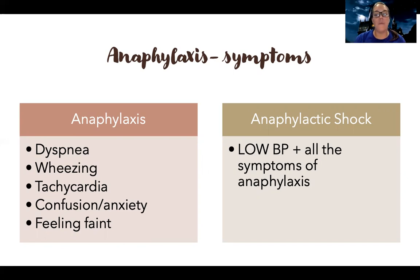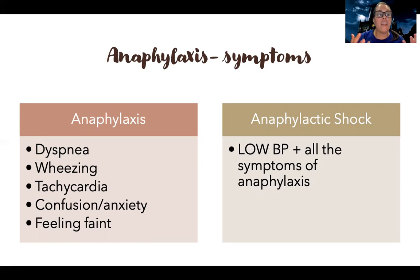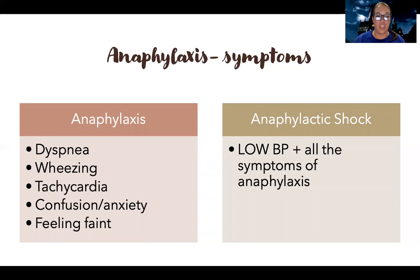Most people with anaphylaxis are going to complain of dyspnea — trouble breathing. They're going to have trouble finding words, or maybe they can't even talk, wheezing, and tachycardia. They're going to have confusion and anxiety a lot of the time and feel very faint. And then when it progresses to shock, that's where the low blood pressure comes in, plus all these symptoms.